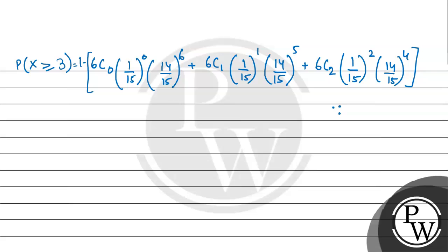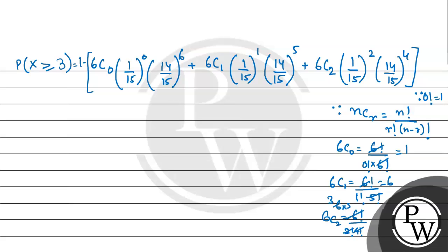I'm using the combination formula which is nCr equals n factorial upon r factorial times n minus r factorial. So 6C0 is 6 factorial upon 0 factorial times 6 factorial, since 0 factorial is 1, that equals 1. 6C1 is 6 factorial upon 1 factorial times 5 factorial, so that is 6. And 6C2 is 6 factorial upon 2 factorial times 4 factorial, so 6 times 5 divided by 2, that is 15.